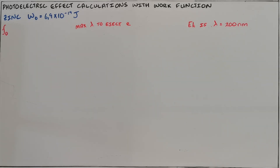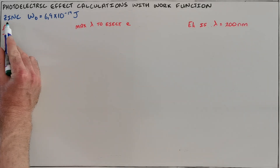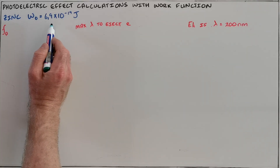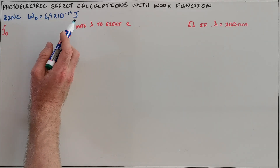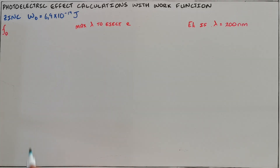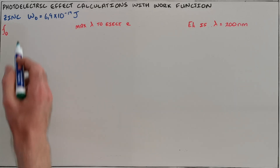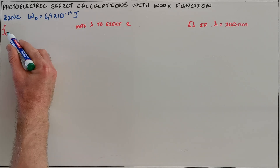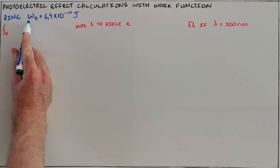Using the work function for a specific metal, there are a number of calculations that we can do. By way of an example, we have here the work function for zinc as 6.9 times 10 to the negative 19 joules. Remember that work function means the minimum energy required to eject an electron from the surface of that metal.